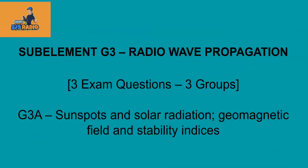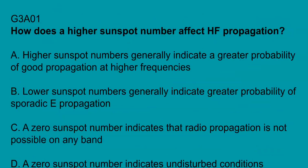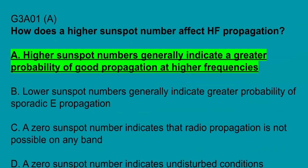Sub-element G3 covers radio waves. Three exam questions come from the three groups. First up, G3A: sunspots and solar radiation, electromagnetic field, and instability indices. G3A01: how does a higher sunspot number affect HF propagation? Higher sunspot numbers generally indicate a greater probability of good propagation at higher frequencies.